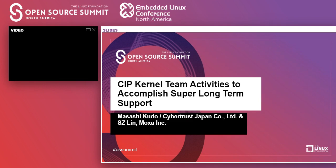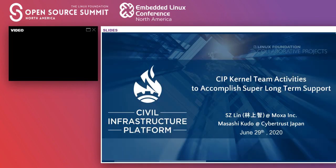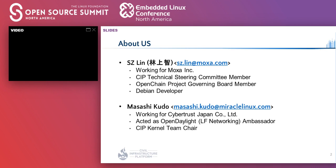This talk is about CIP Kernel Team activities. Let me introduce ourselves. One of the presenters is Linsan from MOPSA. He is a technical steering committee member in CIP and a governing board member of the OpenChain project. He is also actively working as a Debian developer. Another presenter is myself, Masashi Kudo from Cybertrust Japan. I have acted as Open Data Ambassador and currently act as CIP Kernel Team Chair.